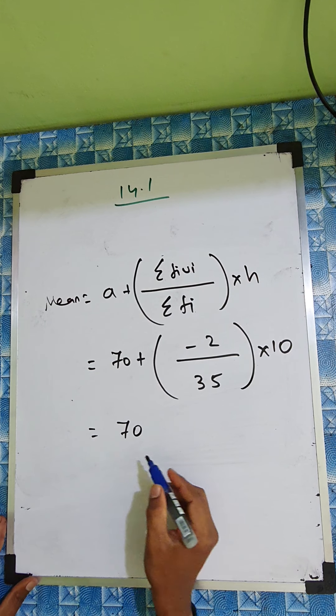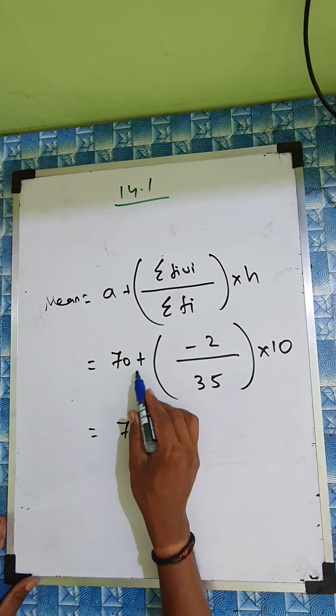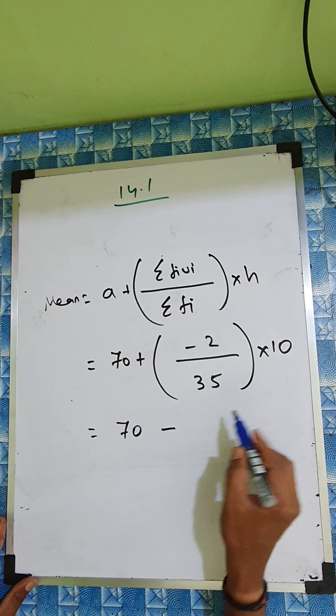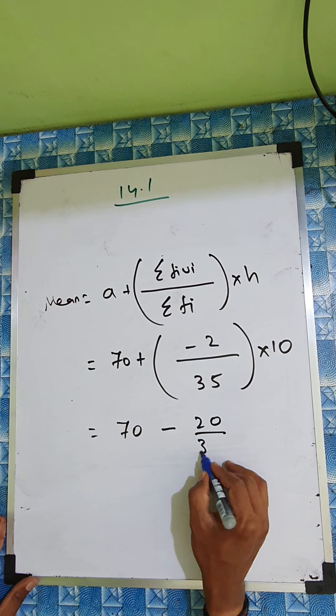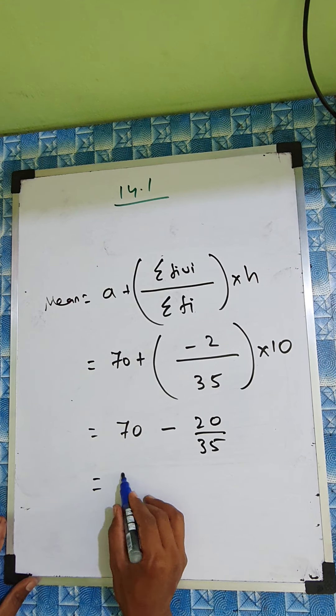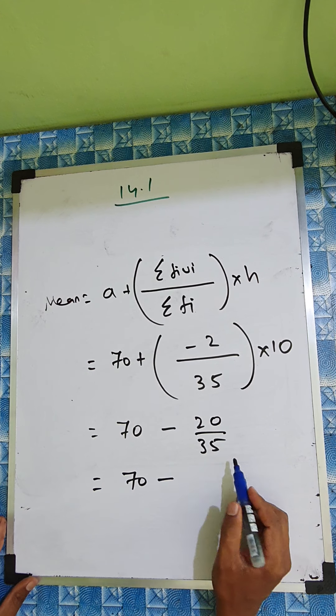So now, here is 70. We'll write the same thing. And plus into minus is minus. 2 into 10 is 20 by 35. So 70 minus. Now you divide this one.